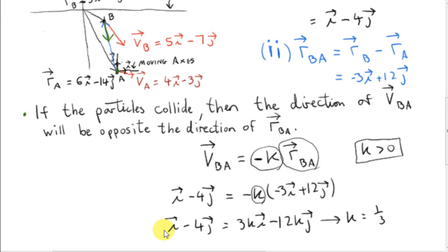Now all we have to do is compare the components. So the component of i on the left-hand side is plus 1. The component of i on the right-hand side is 3K. So 3K must equal 1. In other words, K must equal 1 divided by 3. And if you plug that value of K in here, minus 12 times plus a third does indeed give you minus 4. So it does work out. So there is a number K such that vector VBA is minus K times vector RBA.